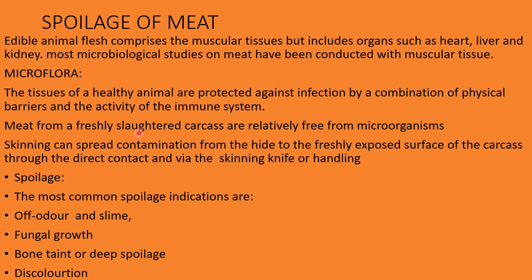The greatest opportunity for contamination from the animals themselves occurs during dressing — the stages where the head, feet, hide, excess fat, viscera, and offal are separated from bones and muscular tissue. Skinning can also spread contamination from the hide to the freshly exposed surface of the carcass through direct contact or via the skin knife or handling person. These are all the ways contamination can occur during the slaughtering process.